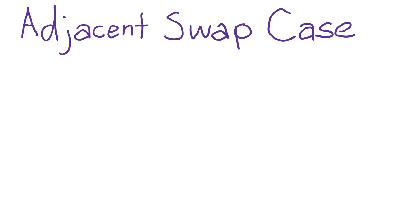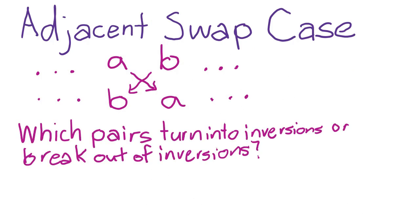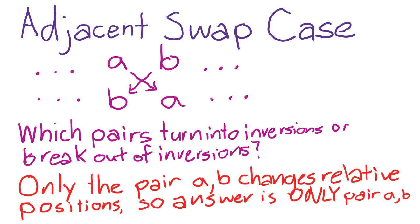Well first, let's prove it for the simple case, where the two numbers we are swapping are adjacent. Let the two relevant numbers be a and b, and then consider which pairs flip their inversion status after we swap the two. Notice that for all possible pairs, none of them swap their relative positions except for the pair involving a and b. That means that, besides the pair a and b, all other pairs don't have their inversion status changed at all.